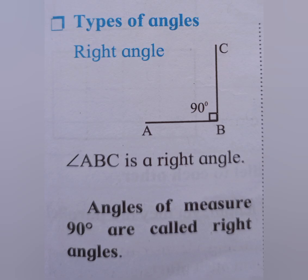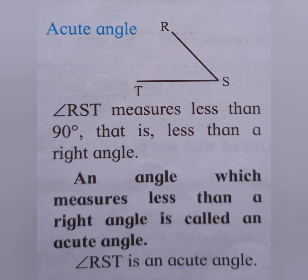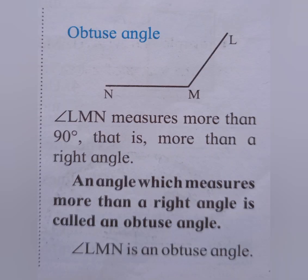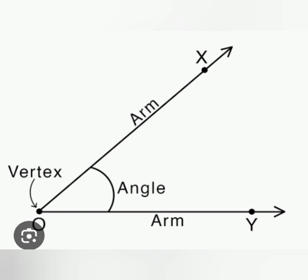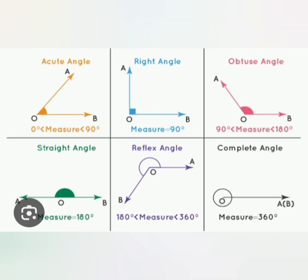We can see the definitions of angles. Right angle. Acute angle: below 90 degrees. Obtuse angle: above 90 degrees. We can see vertex O, arm AO and OB. XO is the arm, OY is the arm, and O is the vertex. Acute angle: less than 90 degrees. Right angle: 90 degrees. Obtuse angle: greater than 90 degrees.